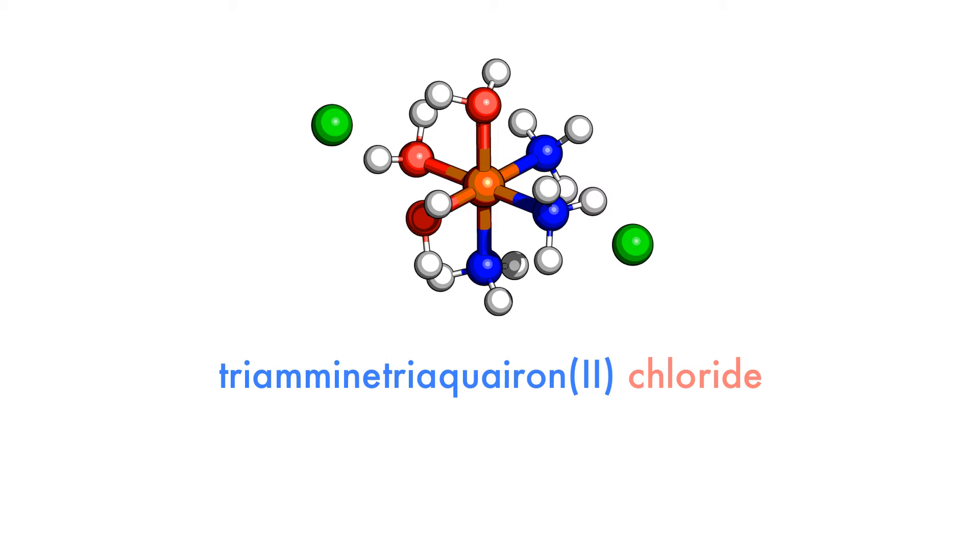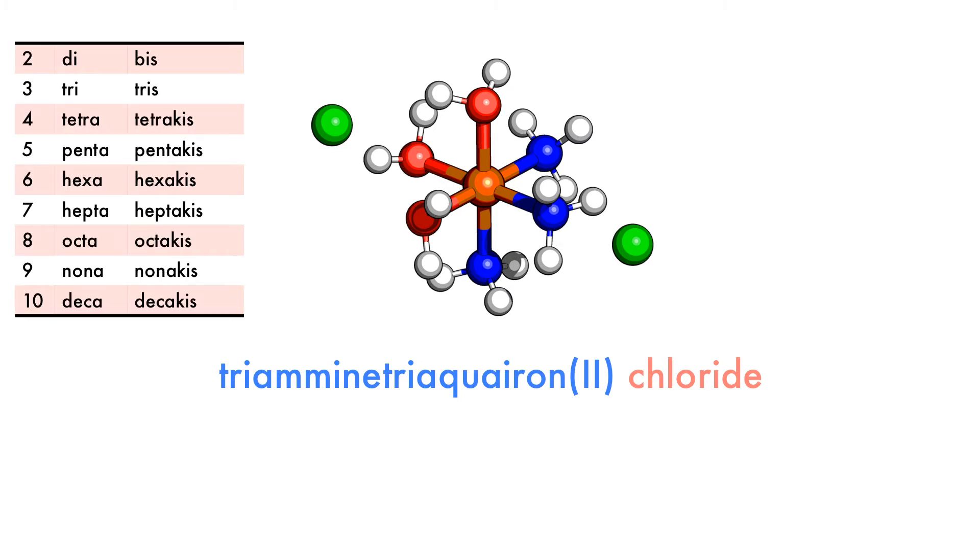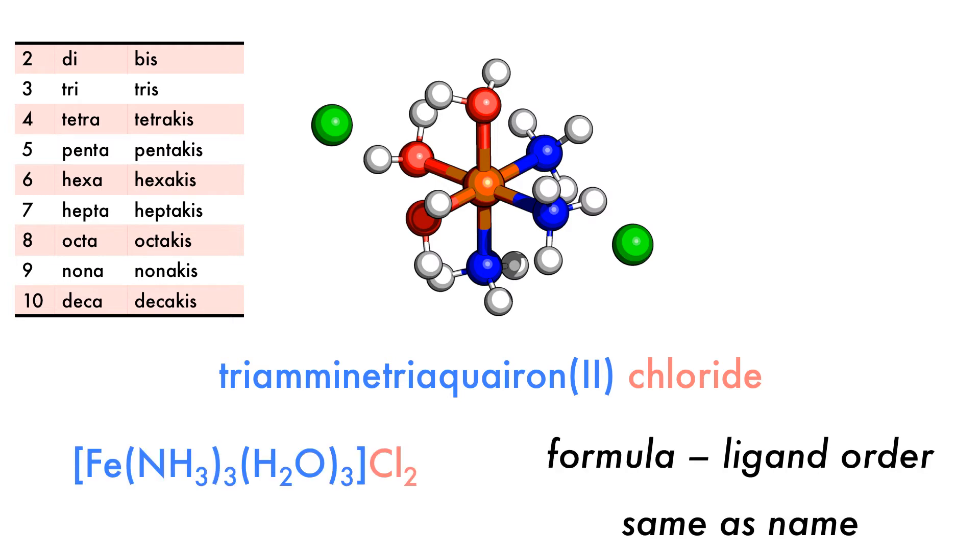If the name already includes a Greek prefix, is polydentate, or starts with a vowel, we cannot use the usual Greek prefixes and need to use a different prefix, such as those listed in the third column of this table. So in our example here, we have three water ligands called aqua and three ammonia ligands called amine. We use this same order for the formula.